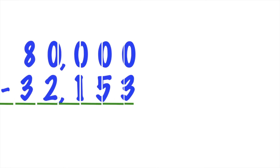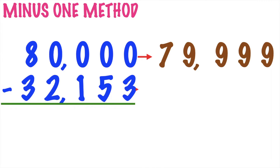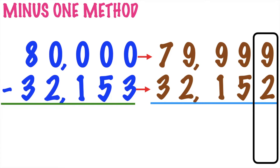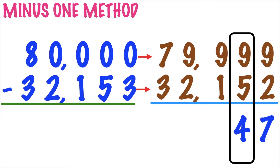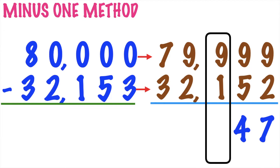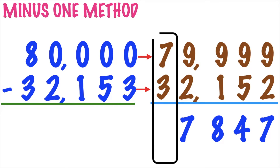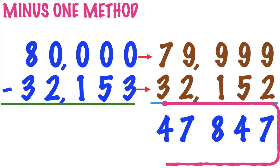Let's have the next number. Let's use again the minus-1 method. 80,000 will become 79,999. Then 32,153 will become 32,152. Then let's subtract them starting from the ones place. 9 minus 2 equals 7. Then 9 minus 5 equals? Good job, it's 4. Then 9 minus 1 equals? Very good, it's 8. How about 9 minus 2? Excellent, it's 7. And lastly, 7 minus 3 equals? Fantastic, it's 4. So the difference is 47,847.